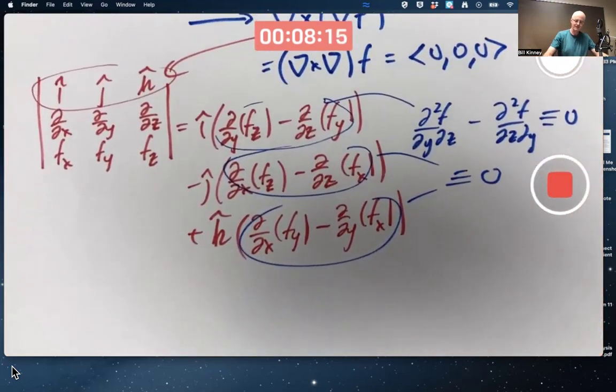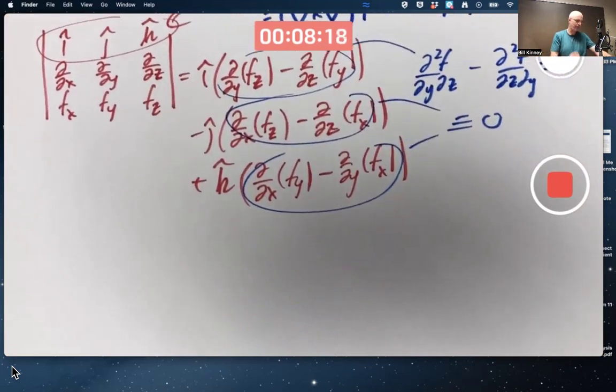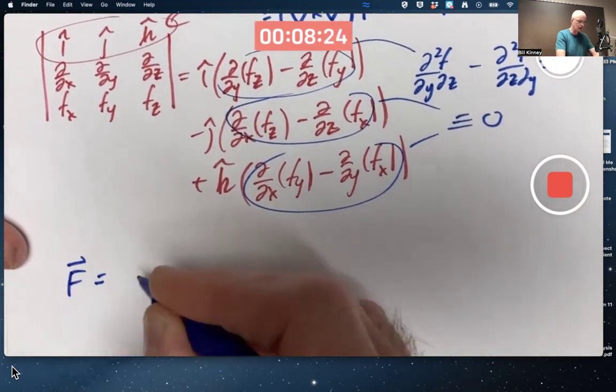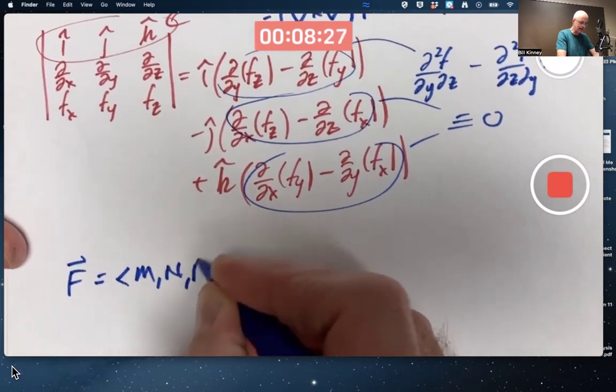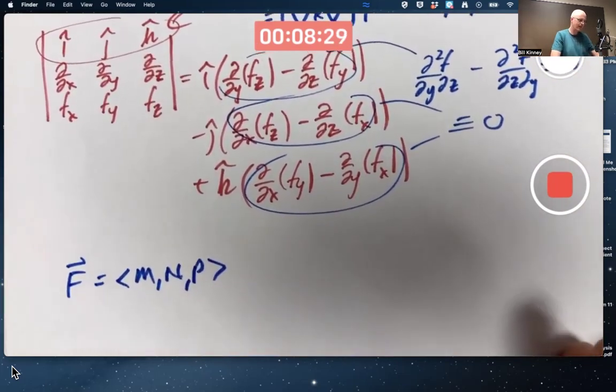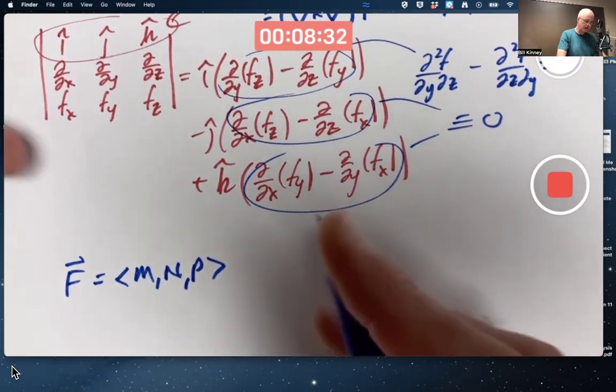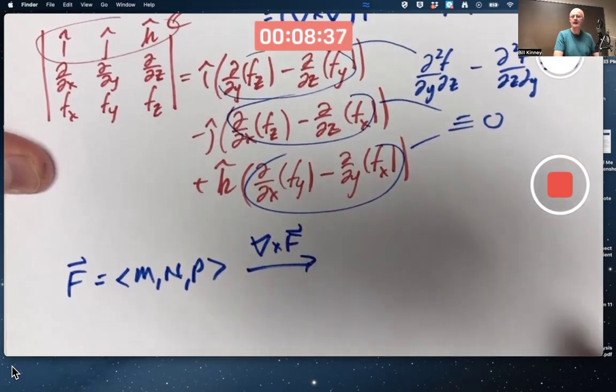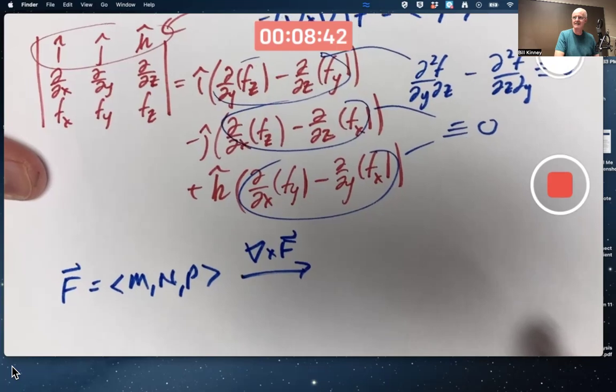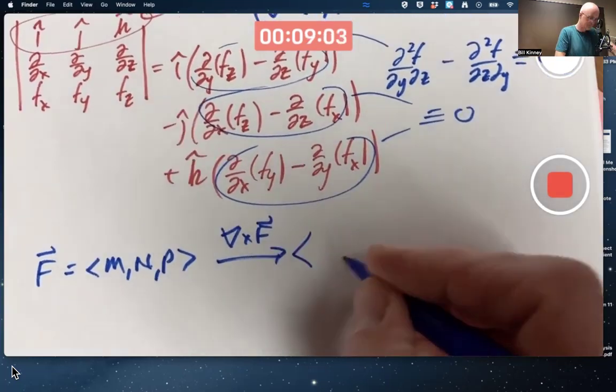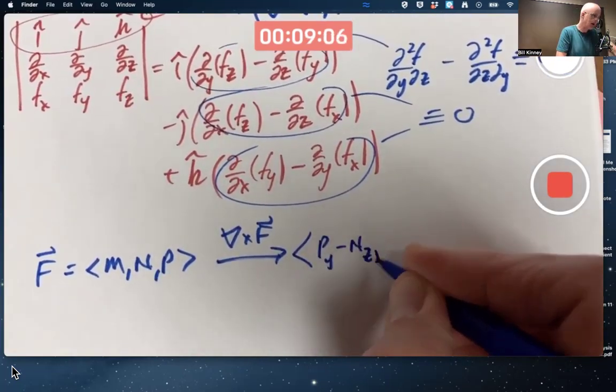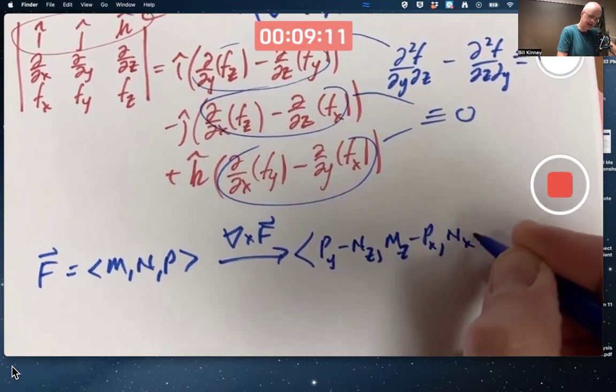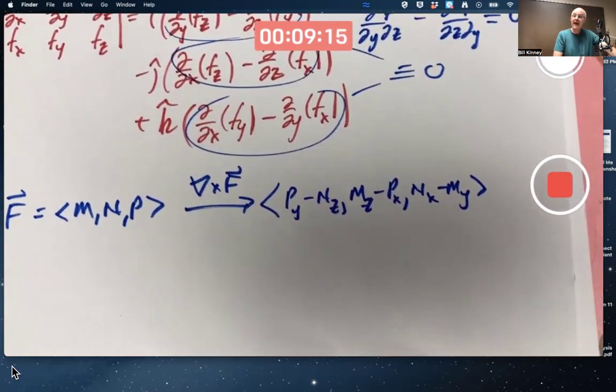Another interesting thing is that if you've got a vector field F, whose components are M, N, and P, an arbitrary vector field, and you compute the curl of that thing, using the del operator with a cross to denote the curl: Py minus Nz, comma, Mz minus Px, comma, Nx minus My.